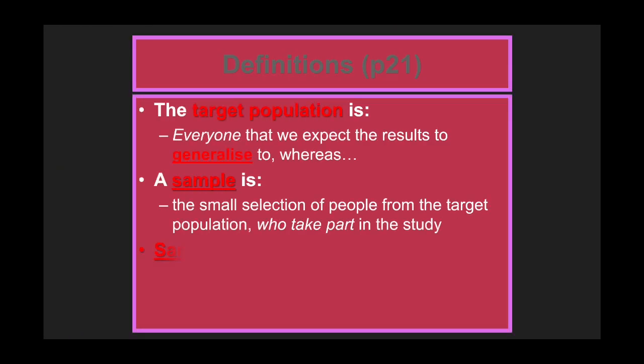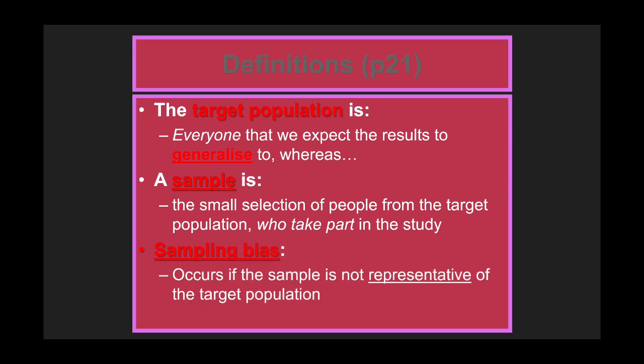If it isn't representative — if it's an unrepresentative sample — then as we mentioned yesterday, you will have what is known as a sample bias. It means the sample is skewed in favour of a certain characteristic. For example, if your target population was all males but you only did research involving all females, that is a sample bias. It's not representative of male behaviour and you would struggle to generalise your findings. The aim of picking a specific sampling technique is to use one that is as representative of the target population as possible.